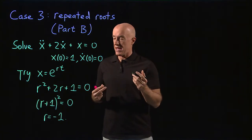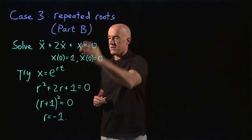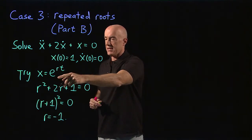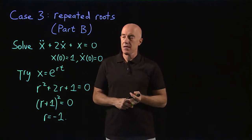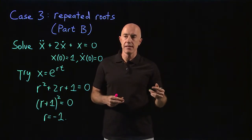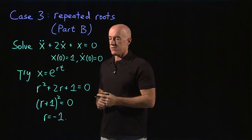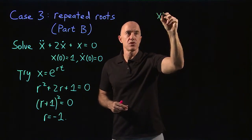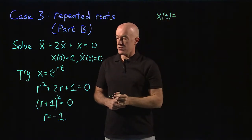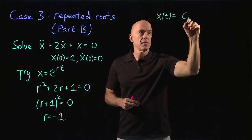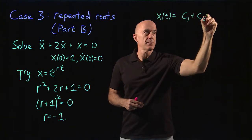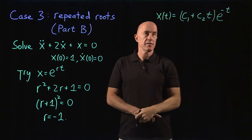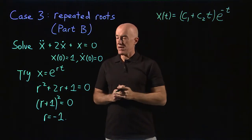We then have the case of a single root of the characteristic equation. So one of the solutions is e to the minus t. The other solution will be multiplied by t, so t times e to the minus t. The general solution x of t equals a constant plus another constant times t times e to the minus t.